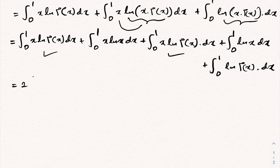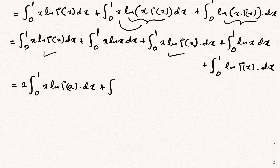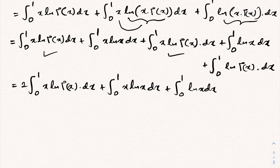Since we have the same integral on both sides, we collect terms to get 2 times the integral from 0 to 1 of x ln Gamma(x) dx, plus the integral from 0 to 1 of x ln(x) dx, plus the integral from 0 to 1 of ln(x) dx, plus the integral from 0 to 1 of ln Gamma(x) dx.